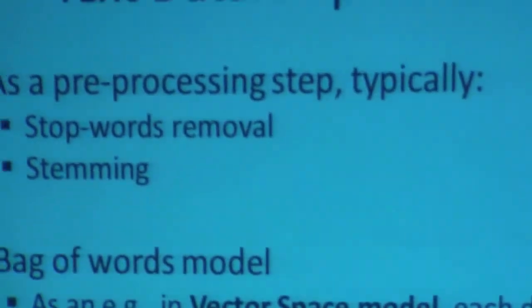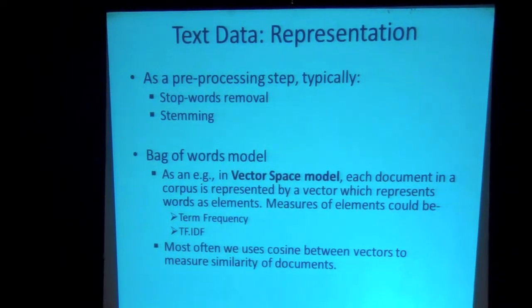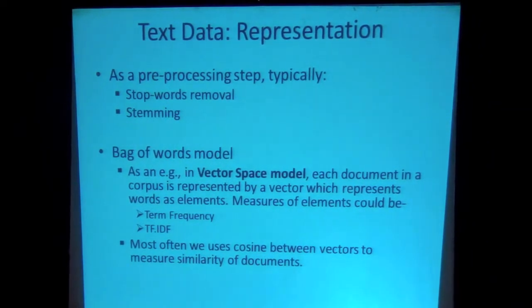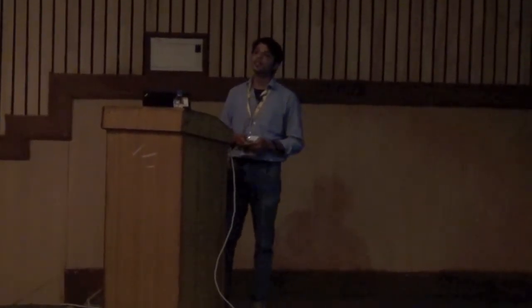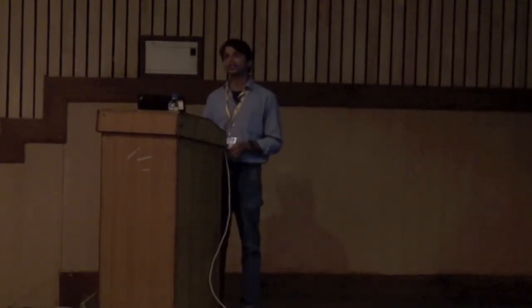How do we capture and represent text data? First of all, the general step done whenever we start dealing with text data is some kind of pre-processing. In the pre-processing phase we typically remove the stop words, which are the very commonly occurring words like articles and prepositions. This is called stop word removal. There is also something called stemming, which means we cut down the word to its root — for example, 'raining' becomes 'rain'. This is a standard pre-processing step done in most cases.